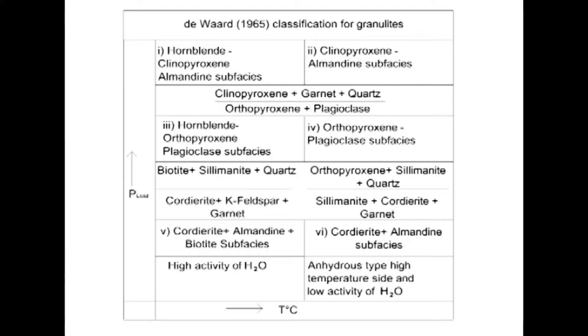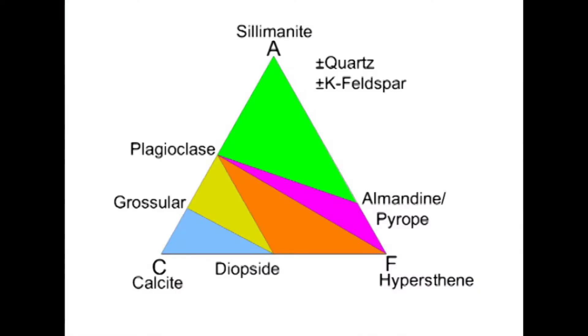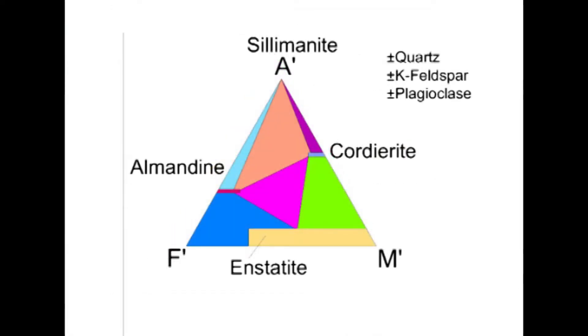If biotite is present, then the activity of water is more. If biotite or hornblende is absent, then it is anhydrous type and activity of water is less. The temperature tends to be normally increased where the activity of water is low. This is based on the different type of load pressure, temperature, and activity of water. Dewey's in 1965 proposed a six-fold classification of granulite facies. The two sub-facies of relatively high load pressure are characterized by clinopyroxene, almandine, and two intermediate sub-facies by orthopyroxene, plagioclase, and two sub-facies of relatively low load pressure by cordierite, almandine assemblage.